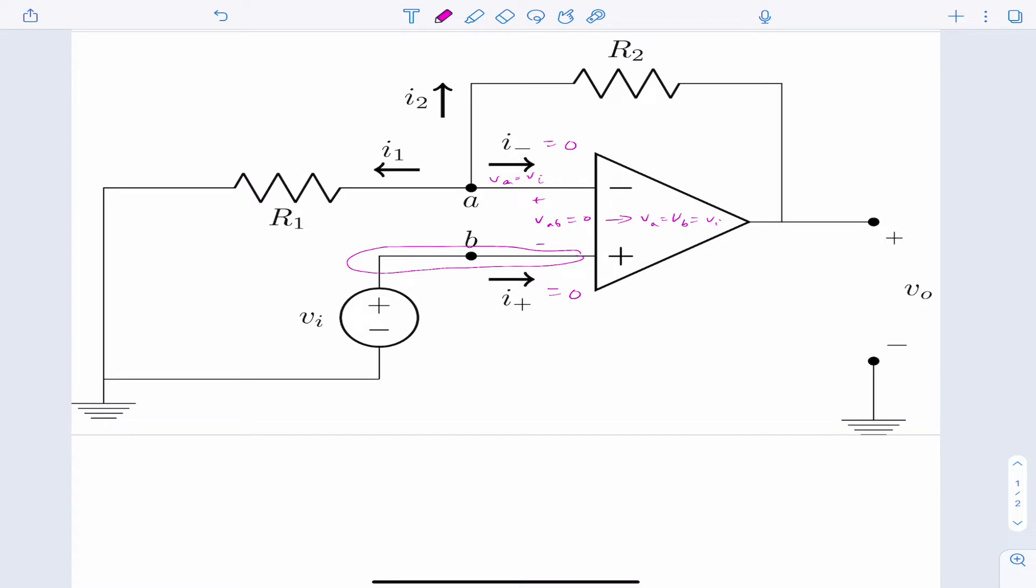And normally people annotate this by putting maybe a dashed line here between A and B and signifying that this is a virtual short circuit. Okay, so VA and VB are the same.